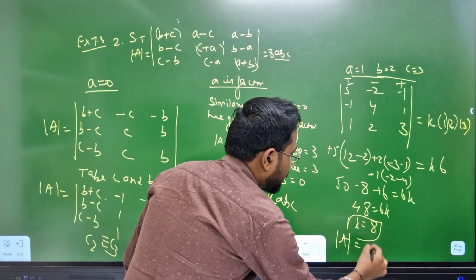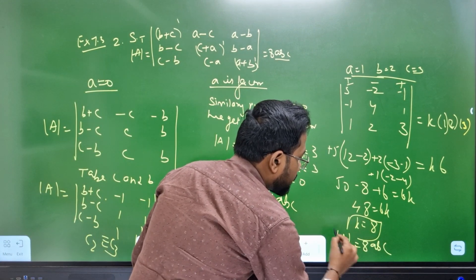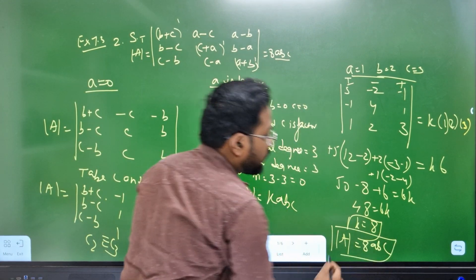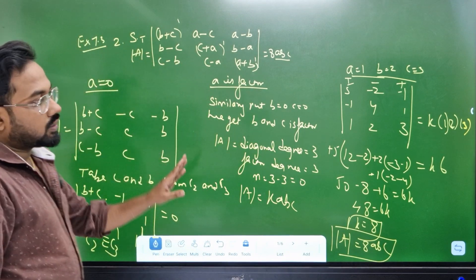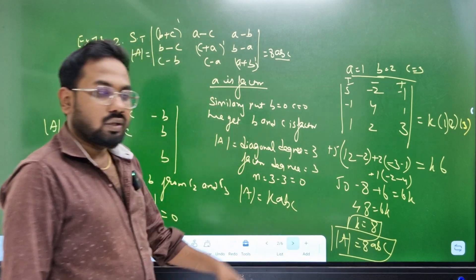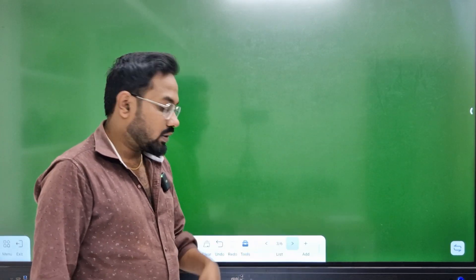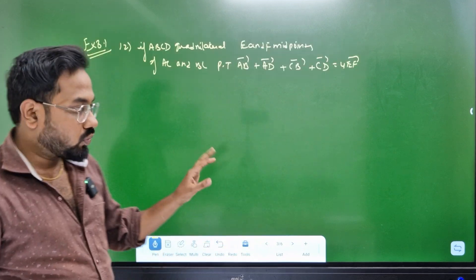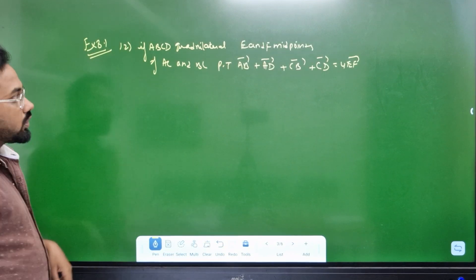Determinant A is equal to 8ABC. Hence proved. This is a 5 mark question. If you have a 5 mark, you will have a 5 mark.